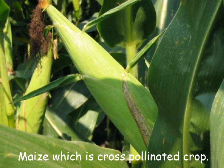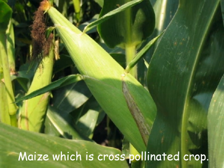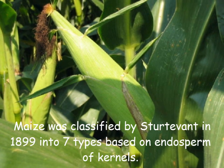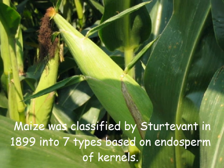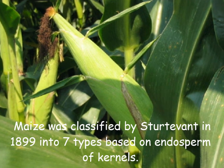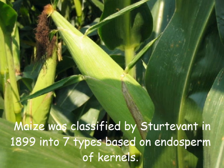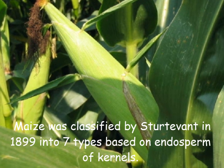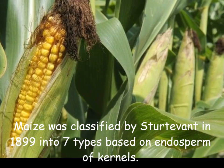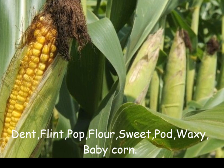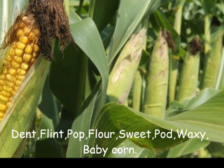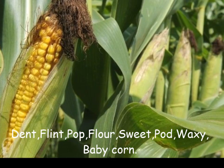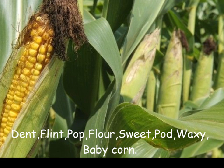Maize, which is a cross-pollinated crop, was classified by Sturtevant in 1899 into 7 types based on the endosperm of kernels: dent corn, flint corn, popcorn, flour corn, sweet corn, pod corn, and waxy corn.